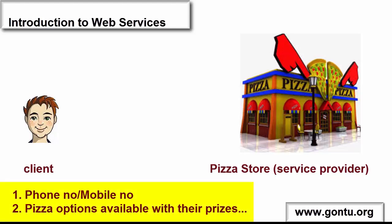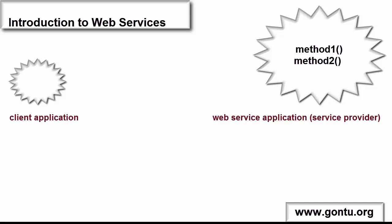Usually, the client gets all such information through the pizza store's website or brochure. Once he has all the details, he can happily make a phone call to the pizza store and place an order. The important point to note is that without all such basic information, the client cannot utilize the service offered by the pizza store. In the similar manner, in the programming world too, the client has to know certain basic information about the web service application without which it cannot make a call to any of its methods.